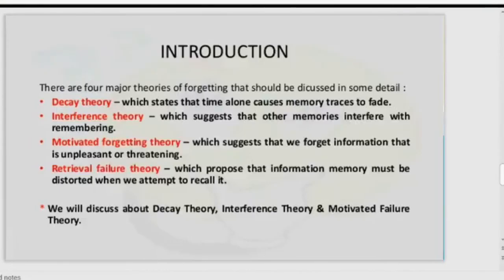There are four major theories of forgetting. Decay theory states that time alone causes memory traces to fade. Interference theory suggests that other memories interfere with remembering. Motivated forgetting theory says we forget information that is unpleasant or threatening to us. Retrieval failure theory proposes that information in memory must be retrieved using cues, and without the right cues we cannot access it.